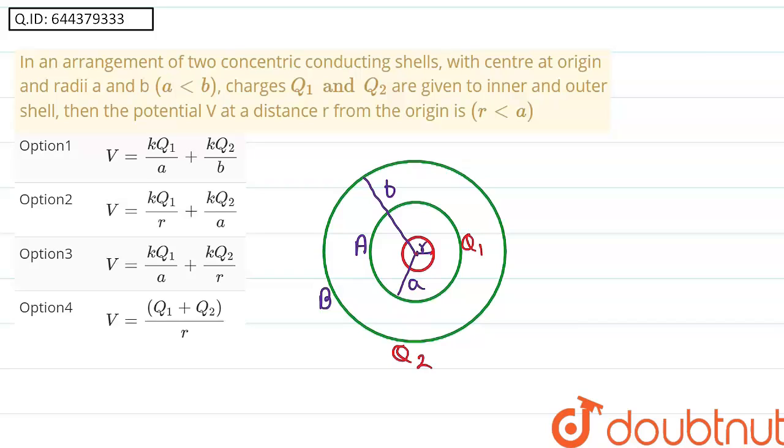Hello friends, the problem is: in a given arrangement of two concentric conducting shells with the center at origin and radii a and b where a is less than b, charges q1 and q2 are given to inner and outer shell. Then find potential V at a distance r from the origin where r is less than a.